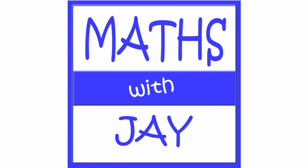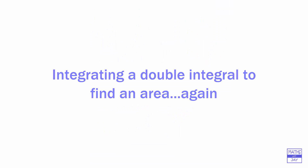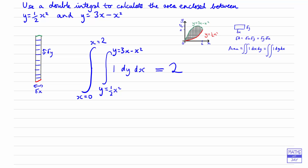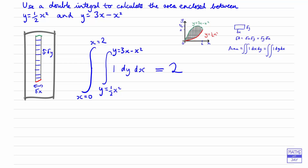Hello, welcome to Maths with Jay. Last time we had a look at using a double integral to find the area enclosed between two curves, and we saw that it was fairly straightforward if we started off by fixing x, integrating over y first with respect to y and then with respect to x. We started by zooming in on one of the vertical elements to see how that works.